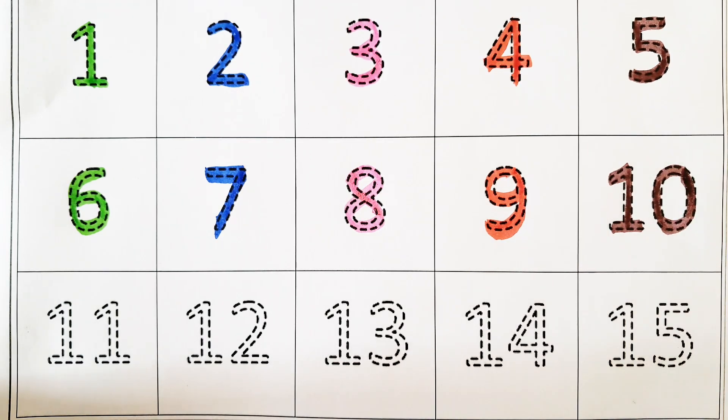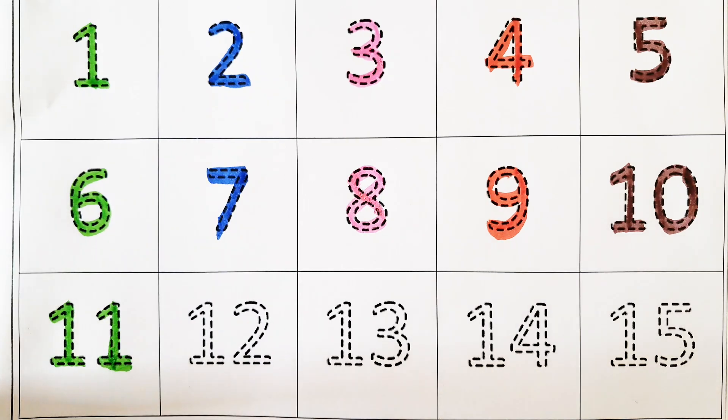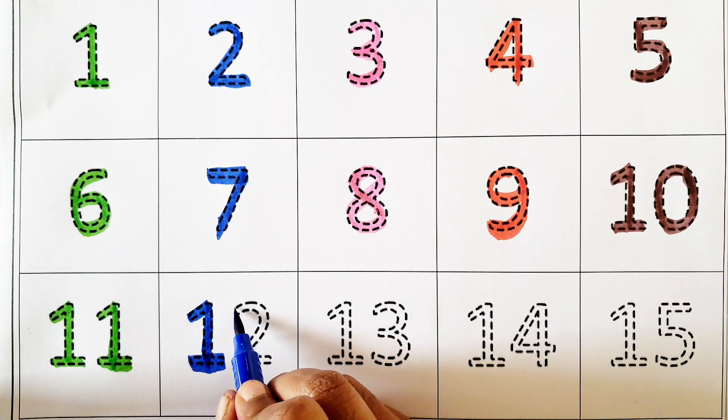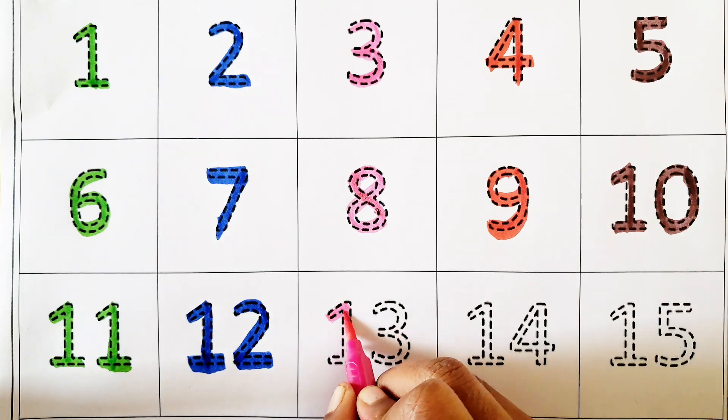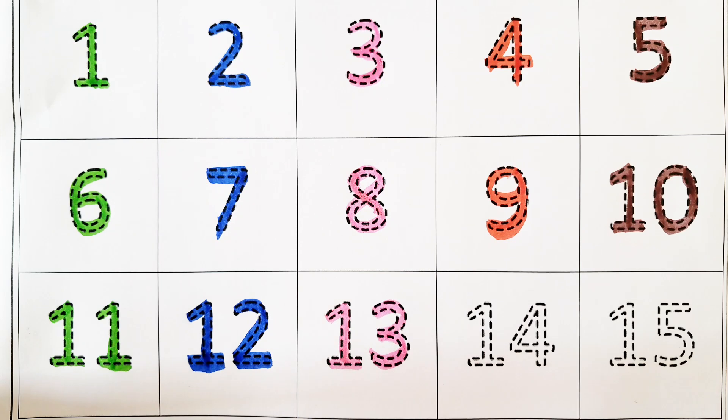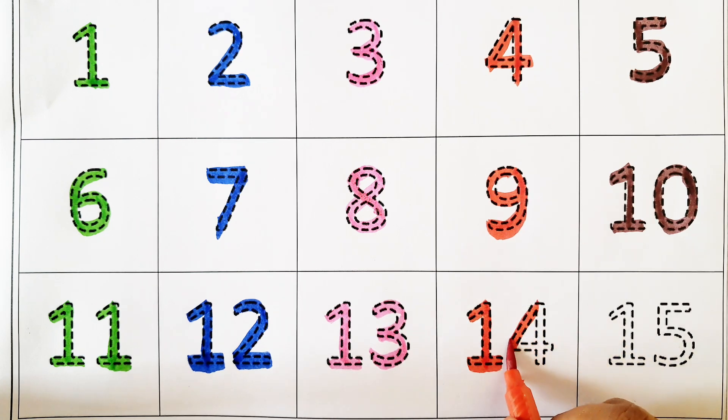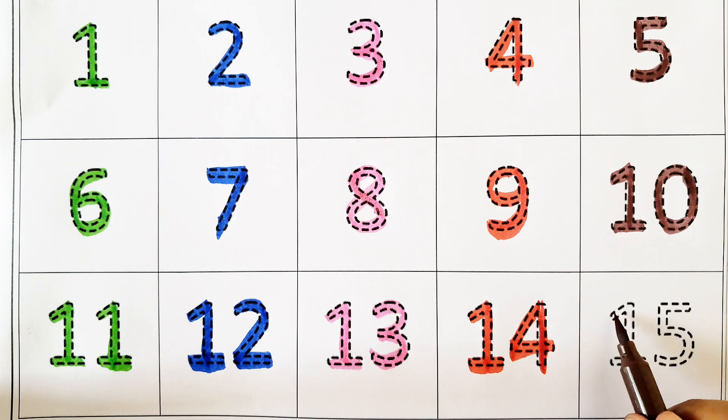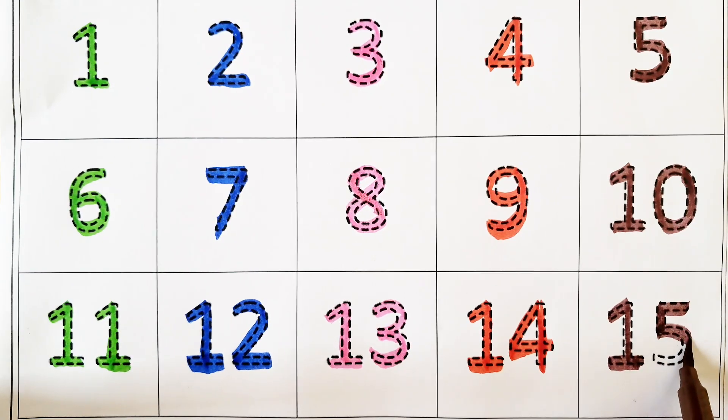Next number 11, eleven, E-L-E-V-E-N. Next number 12, twelve, T-W-E-L-V-E. Next number 13, thirteen, T-H-I-R-T-E-E-N. Next number 14, fourteen, F-O-U-R-T-E-E-N. Next number 15, fifteen, F-I-F-T-E-E-N.